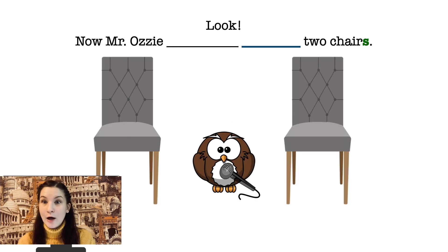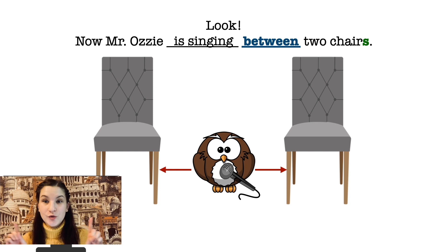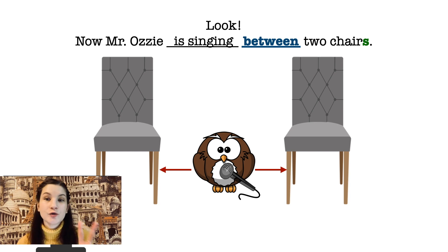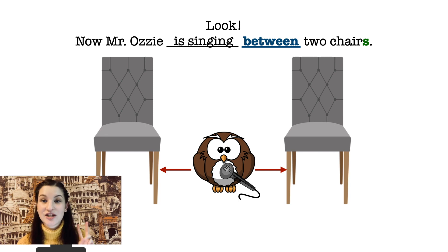Let's continue. Now Mr. Ozzy moved to a different room. Look — now what is he doing? Mr. Ozzy is singing a song — where? Between two chairs. So we have two chairs and Mr. Ozzy is between the two chairs. So let's try to remember: when we have the word 'between', we should have two objects. And if we have two objects that are the same — for example, two chairs — we need to say them in plural. So Mr. Ozzy is between two chairs.